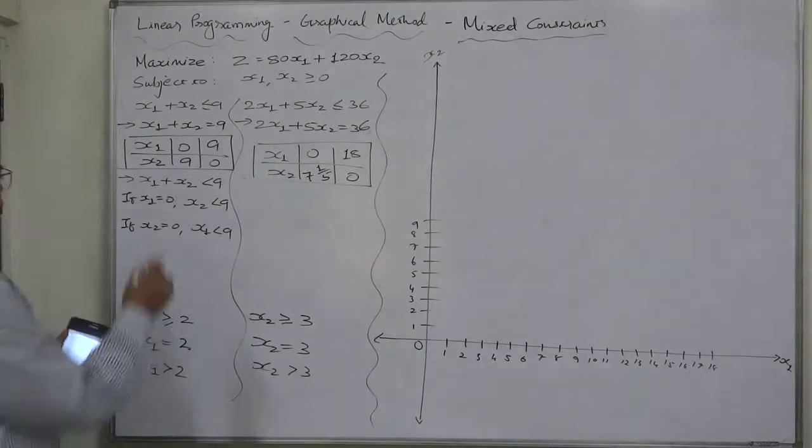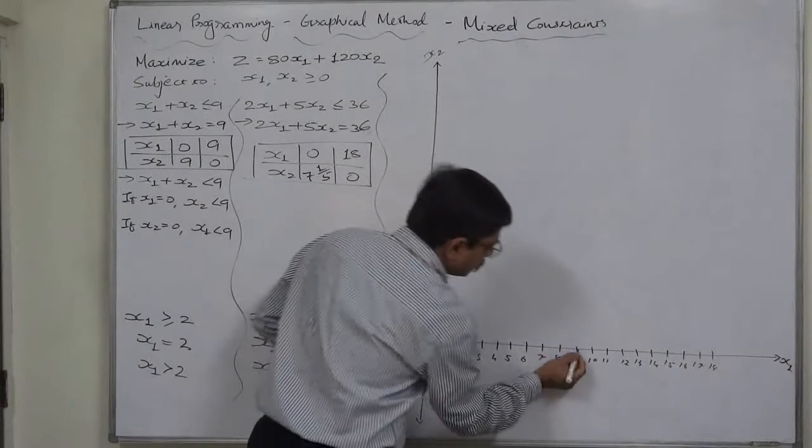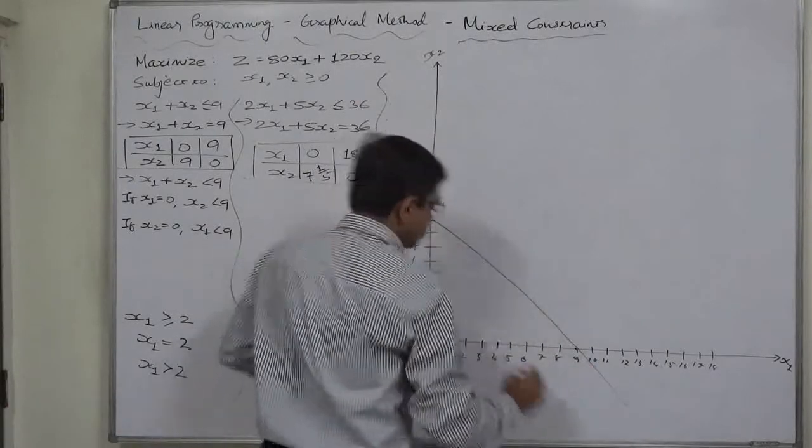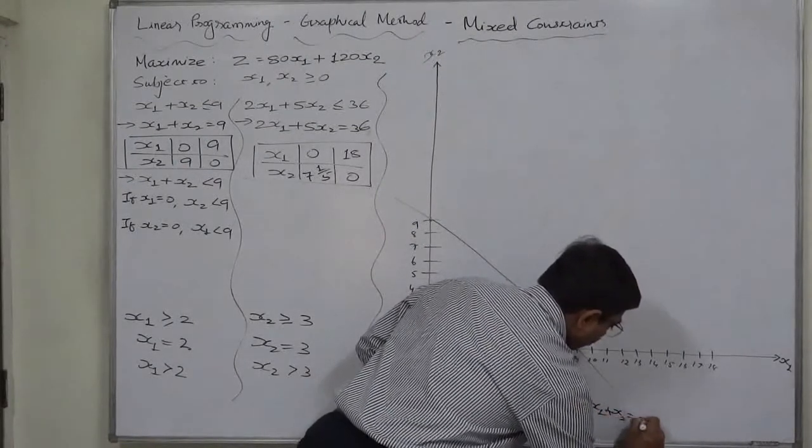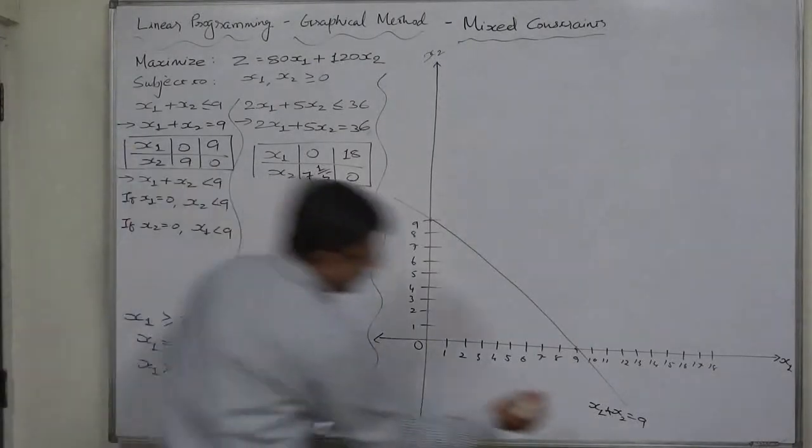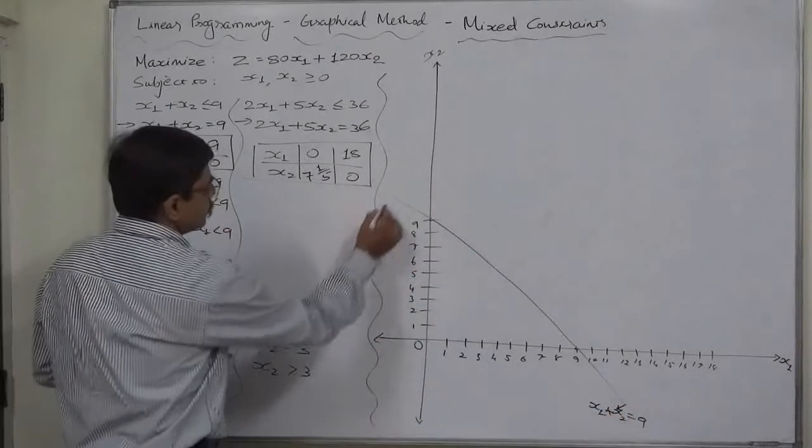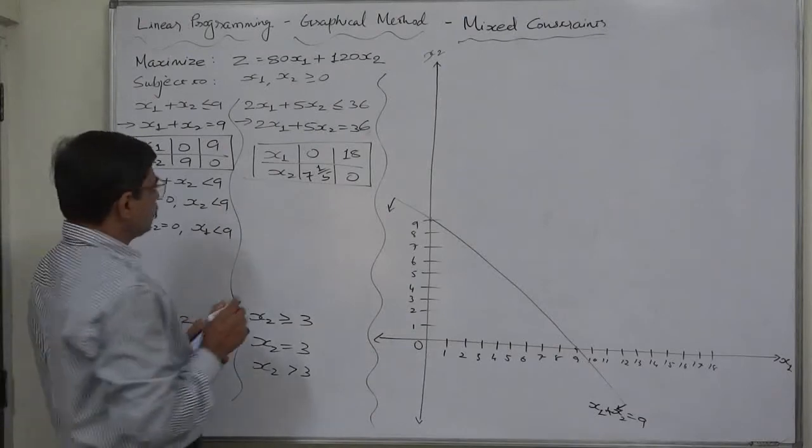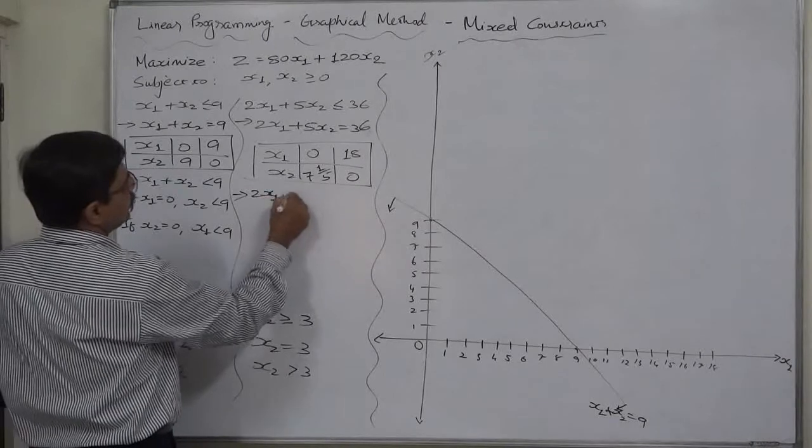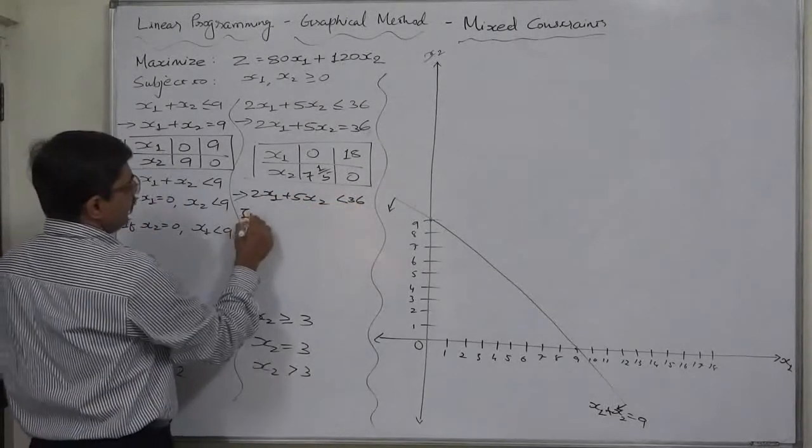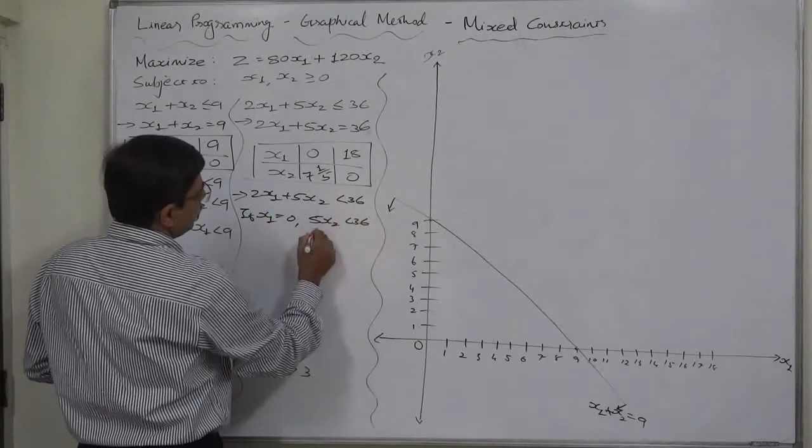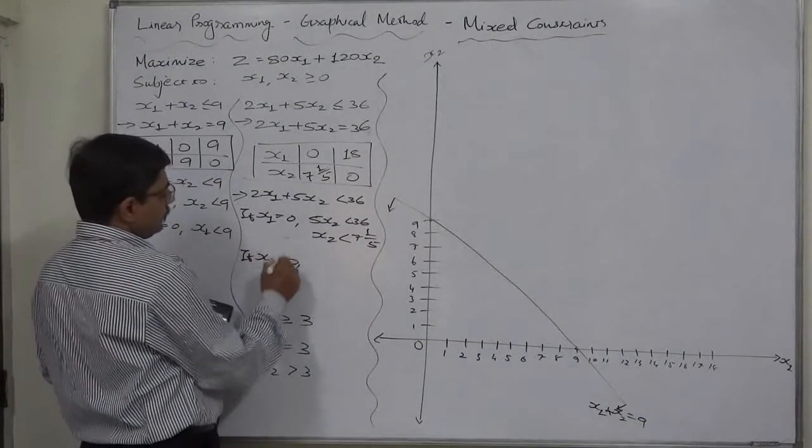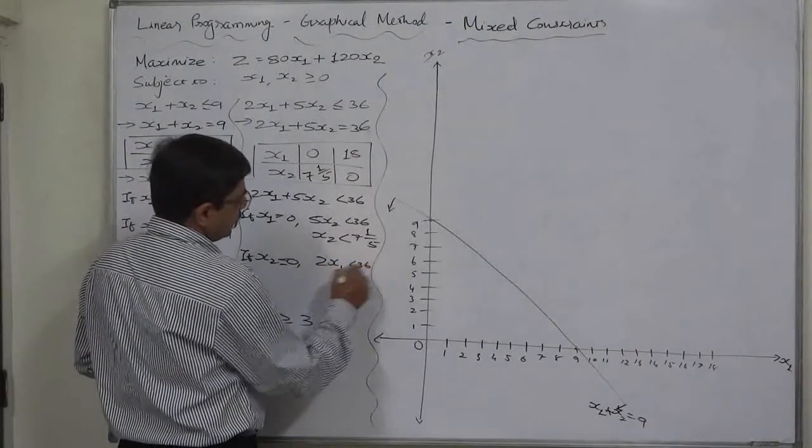Now first 9 and 9 both. Line passing through both these points. x1 plus x2 equals to 9 is the equation. x1 less than 9 that means towards 0 and x2 less than 9 again towards 0. Less than 9 values are below 9, less than 9 values are inside 9. Now second is, inequality part of this one will be 2x1 plus 5x2 less than 36. If x1 takes value 0 then 5x2 less than 36, that means x2 less than 7 and 1 fifth, or in decimal value it is 7.2. If x2 takes value 0 then 2x1 less than 36, that means x1 will be less than 18.